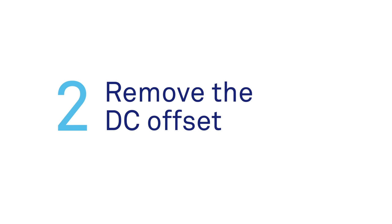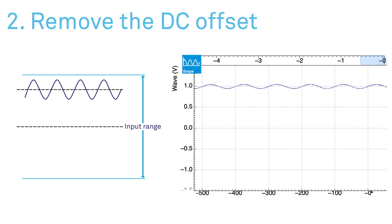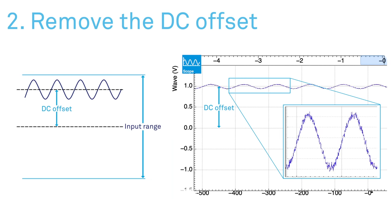The next tip is to remove your DC offset. A large DC component at the input can use up most of the lock-in's dynamic reserve, resulting in reduced measurement performance.